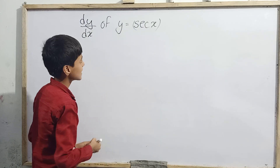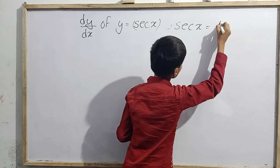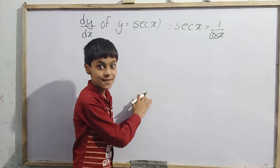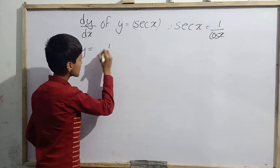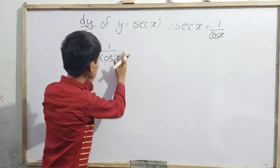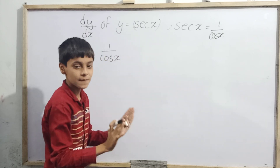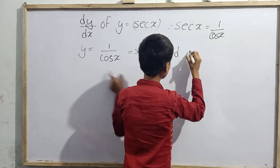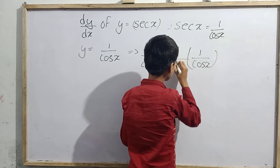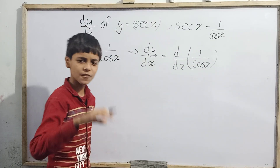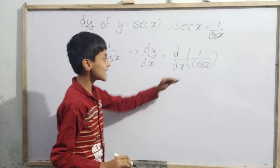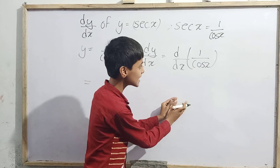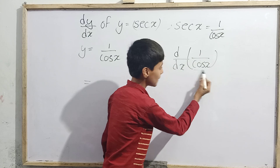First, since we know the formula sec(x) = 1/cos(x), we can write y = 1/cos(x). Instead of differentiating sec(x) directly, we will differentiate 1/cos(x). This gives us dy/dx = differentiation of 1/cos(x) with respect to x. Since it is in the form of a fraction, we will use the u/v (quotient) method.